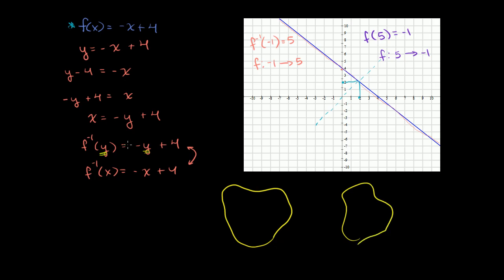So let's say that this is the domain of f. This is the range of f. f will take us from 5 to negative 1. That's what the function f does. And we see that f inverse takes us back from negative 1 to 5, just like it's supposed to do.